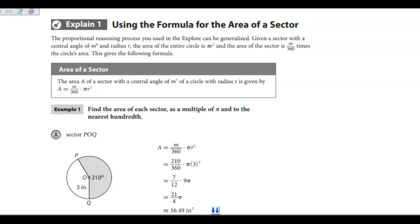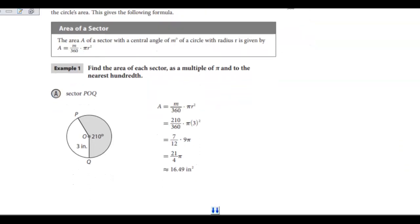We're going to use that information and solve these sections looking for the area of the sector. We're going to multiply as a multiple of pi and to the nearest hundredth, so we're going to find it in terms of pi and simplify it.